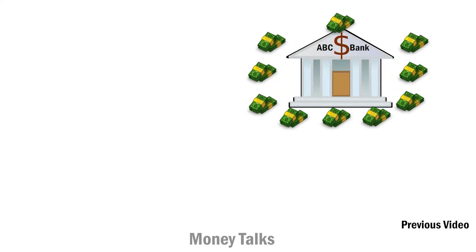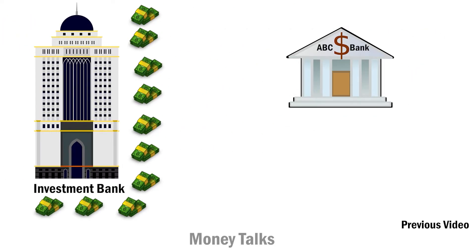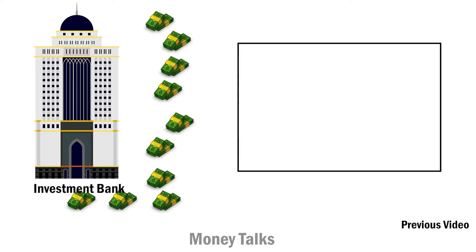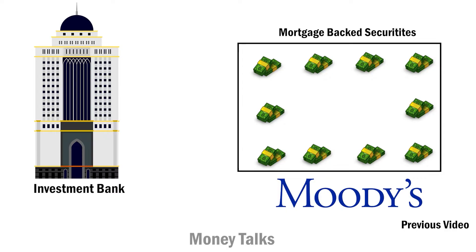Let's say 10 people have taken a loan from ABC Bank to buy a house, and they owe money to ABC Bank. What ABC Bank does is sell these loans to an investment bank — now people owe the money to the investment bank. The investment bank combines these loans and creates new products known as mortgage-backed securities, which are rated by rating agencies like Moody's.